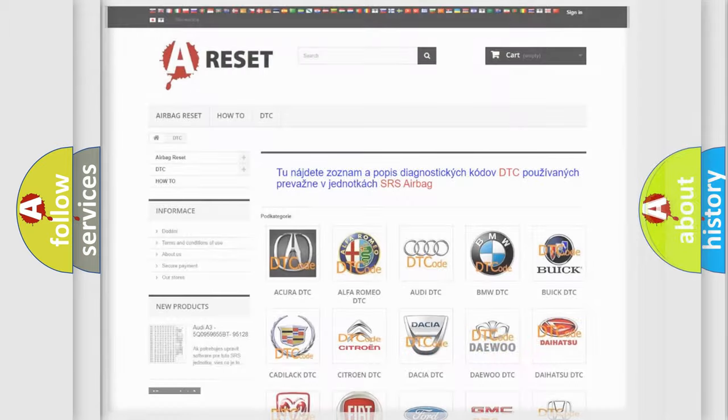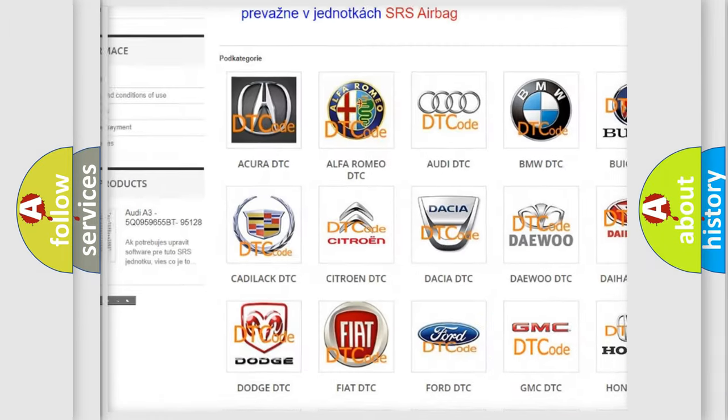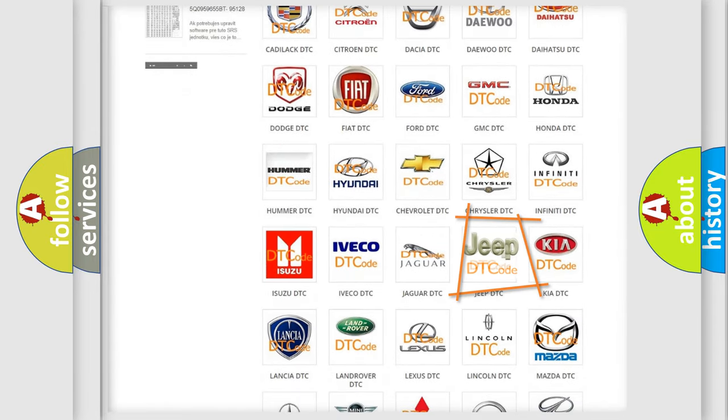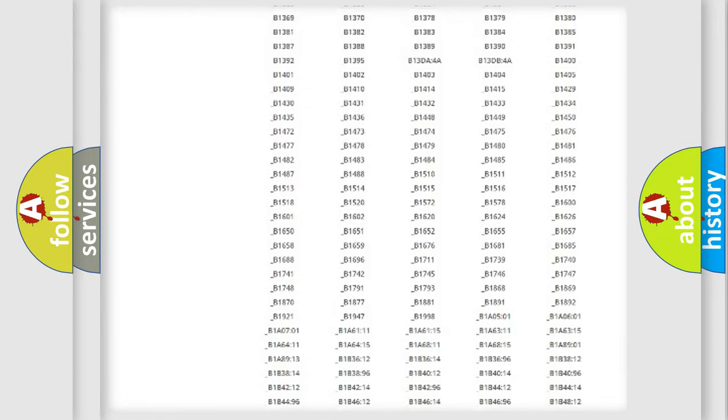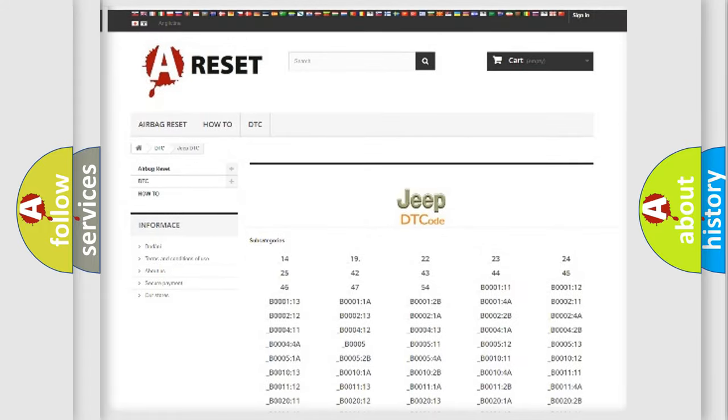Our website airbagreset.sk produces useful videos for you. You do not have to go through the OBD2 protocol anymore to know how to troubleshoot any car breakdown. You will find all the diagnostic codes that can be diagnosed in Jeep vehicles, and many other useful things.